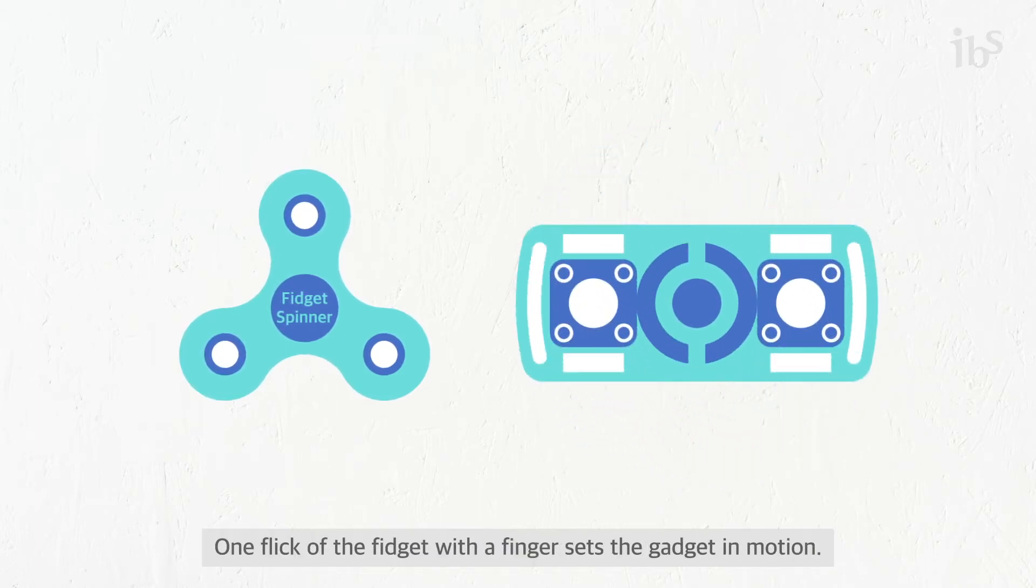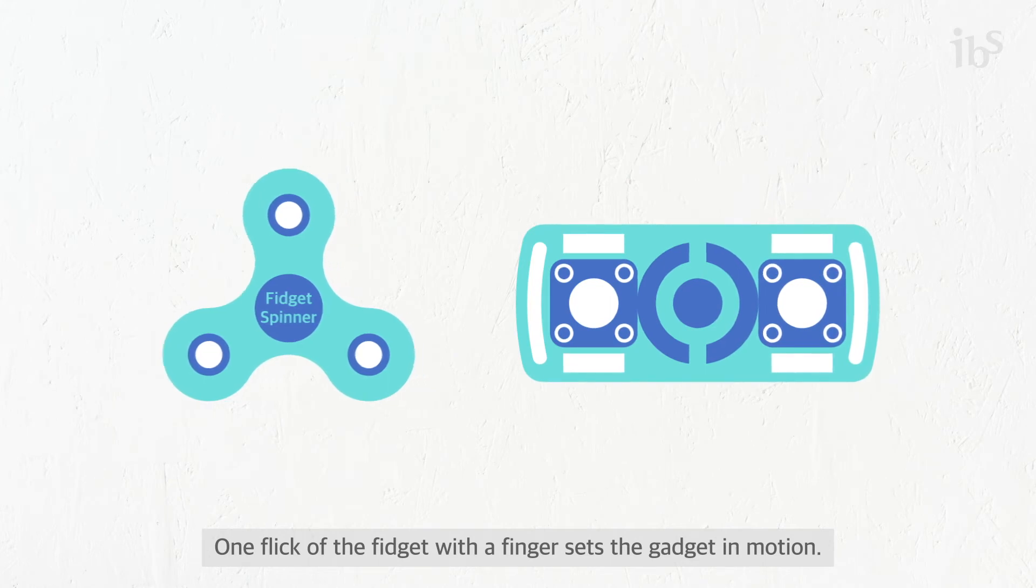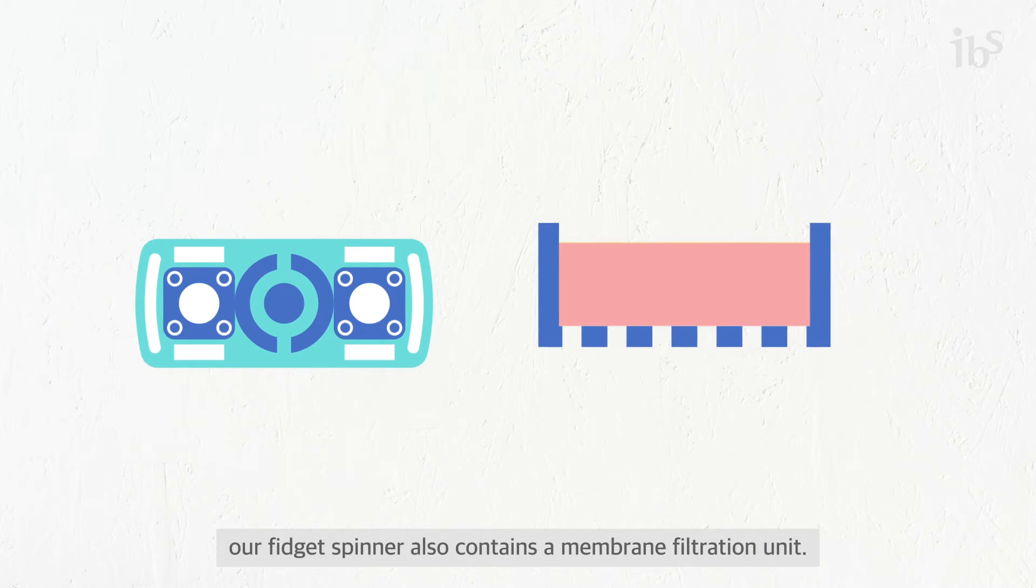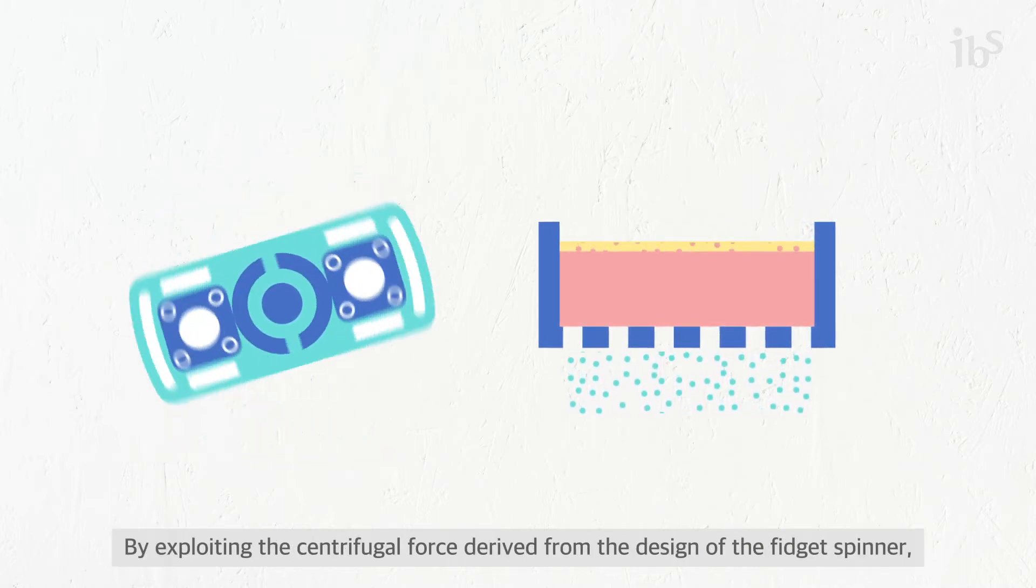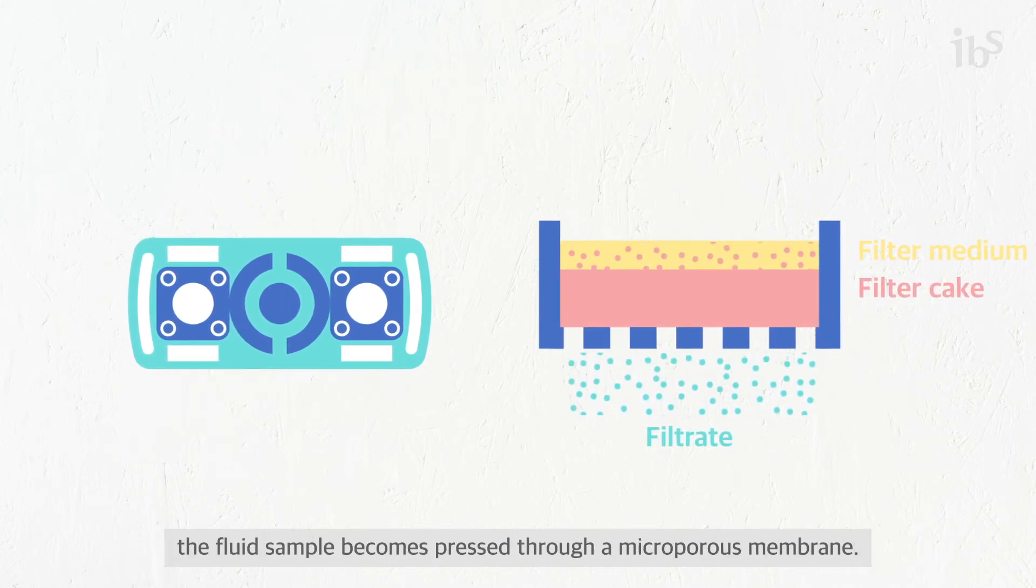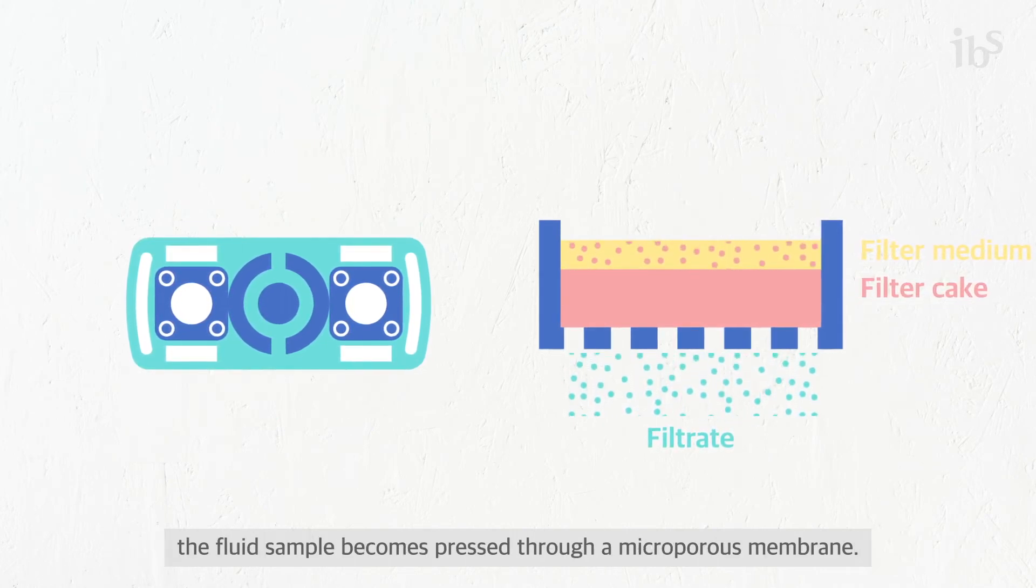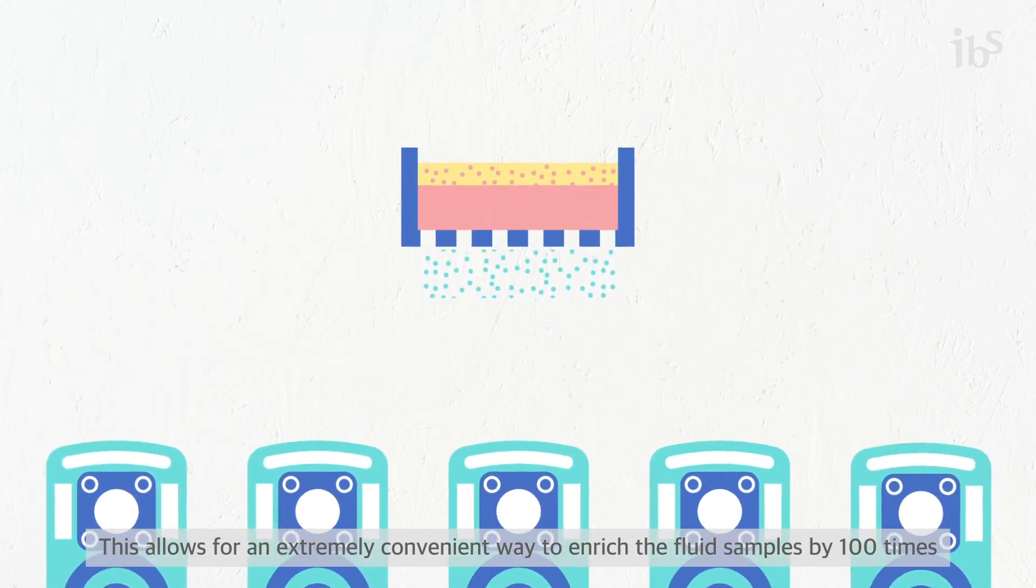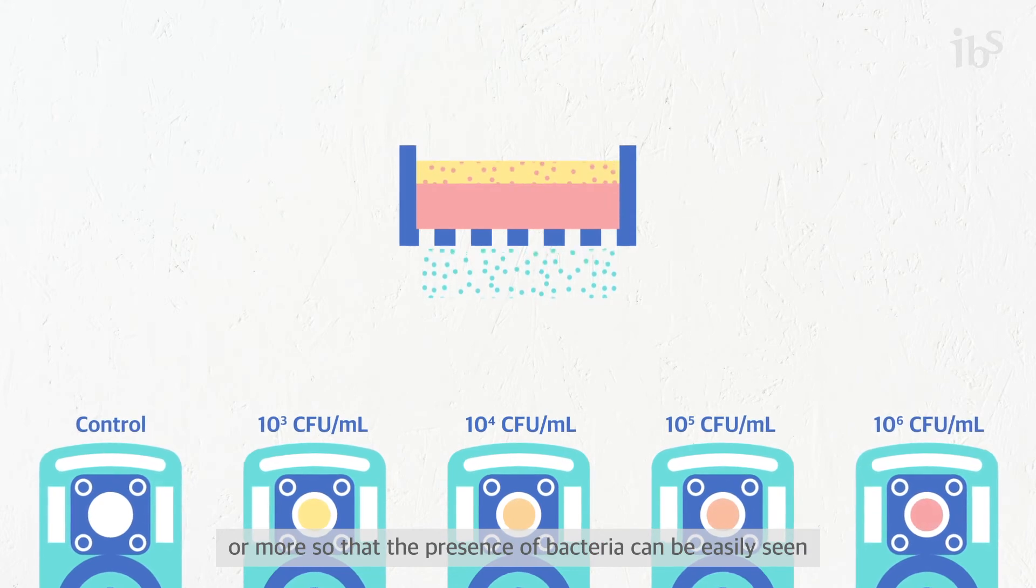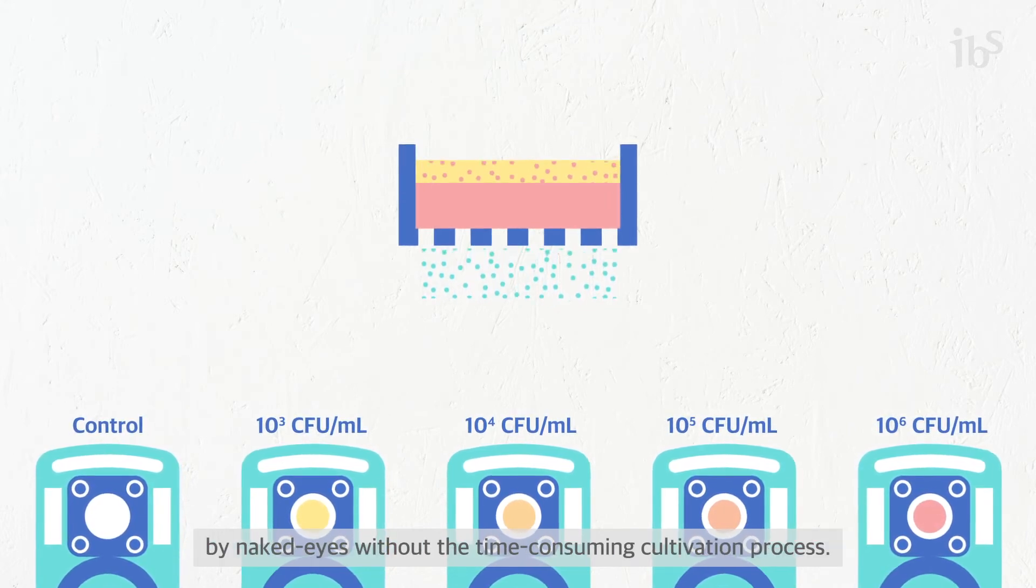In addition to functioning as a centrifuge, our fidget spinner also contains a membrane filtration unit. By exploiting the centrifugal force derived from the fidget spinner design, the fluid sample becomes pressed through a microporous membrane. This allows for an extremely convenient way to enrich the fluid samples by 100 times or more, so that the presence of bacteria can be easily seen by the naked eye without the time-consuming cultivation process.